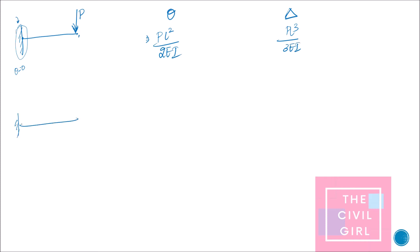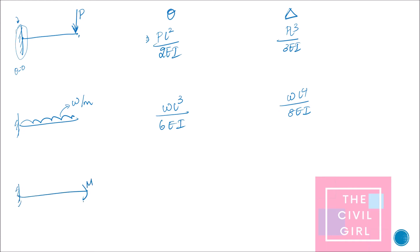If a cantilever beam is subjected to a UDL of intensity W per meter, then theta is equal to WL³ divided by 6EI, whereas delta is equal to WL⁴ divided by 8EI. Next, if the cantilever beam is subjected to a moment M, then theta will be equal to ML divided by EI, and the deflection will be equal to ML² divided by 2EI.